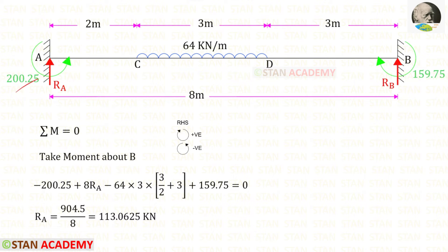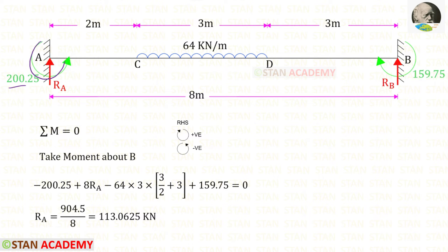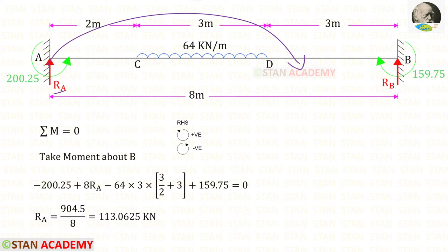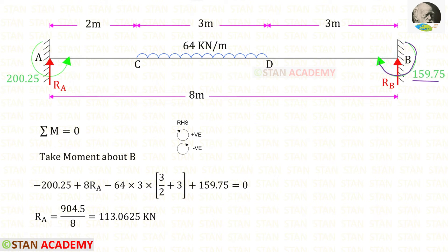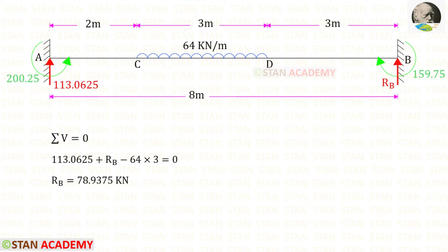We have found both end moments. Now we are going to find the vertical reactions. First, let us find the vertical reaction RA by taking moments about B. MA is acting in the anti-clockwise direction, so it will be negative. RA is acting in the clockwise direction over a distance of 8, so it gives 8·RA (positive). The UDL acts anti-clockwise over a distance of 3, and the moment arm accounts for the position. For MA we get MB acting clockwise, so it is positive. Finally, for RA we will get 113.0625 kilonewton.